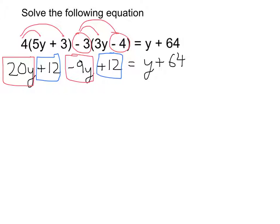And I've got a plus 12 and a plus 12. OK, no, I'm only looking at the left-hand side, just simplifying that first. Nothing more. So 20y minus 9y is 11y, 12 add 12 is 24. So my equation is this here, and this is what I'm now going to solve.